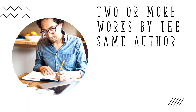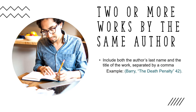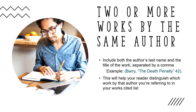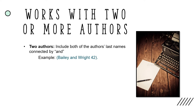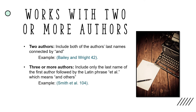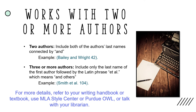If you're citing two or more works by the same author, you'll need to include both the author's last name and the title of the work, separated by a comma, in your in-text citation. This will help your reader distinguish which work by that author you're referring to. If you cite a work by two authors, include both authors' last names connected by AND. If your source has three or more authors, include only the last name of the first author listed, followed by the Latin phrase "et al.," which means "and others." For more details, refer to your writing handbook or textbook, check out online sources such as the MLA Style Center or Purdue OWL, or talk with your librarian.